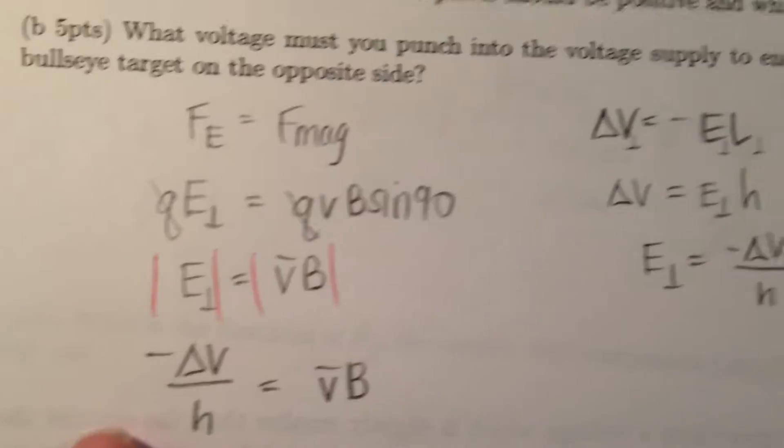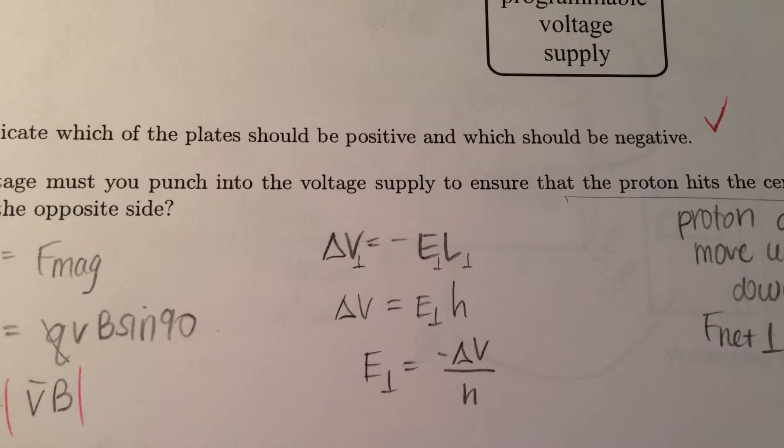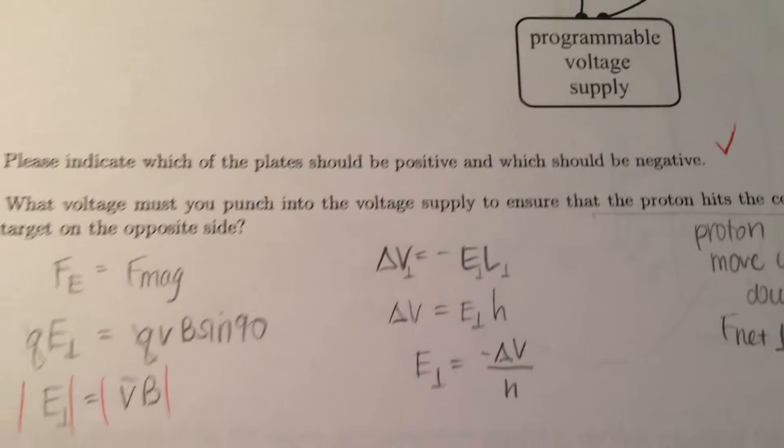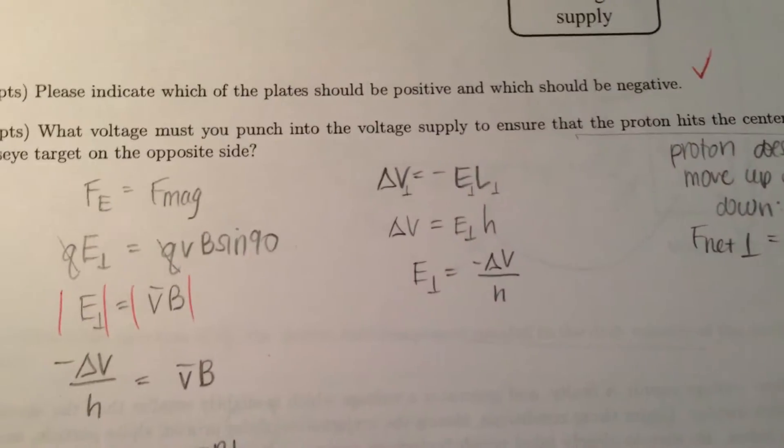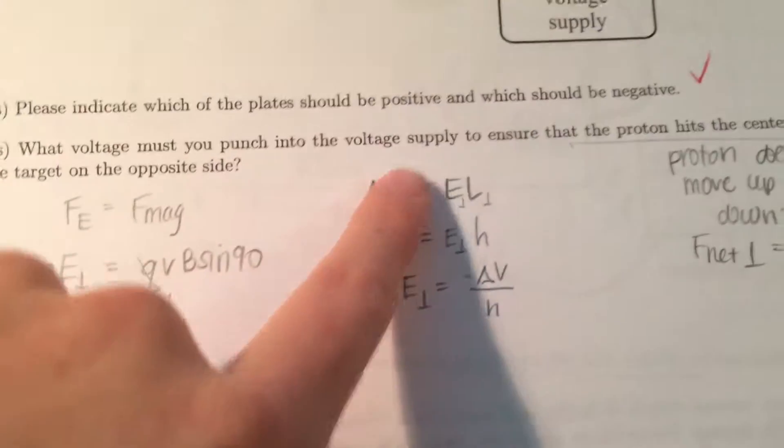Now, I know E perpendicular because the voltage in the perpendicular direction is negative electric field times the length, and the length is H, and I'm solving for electric field as well as voltage.